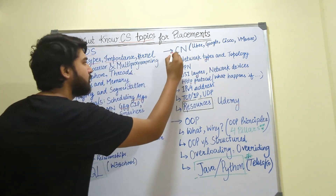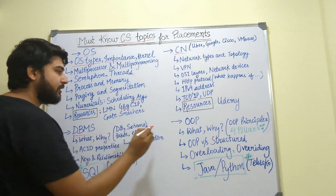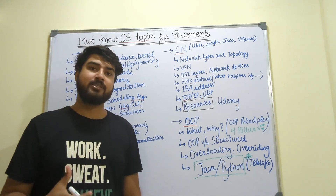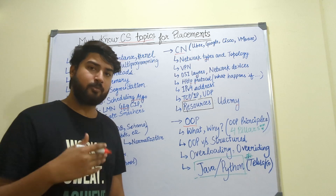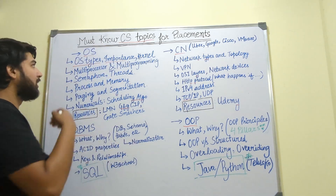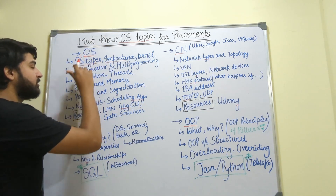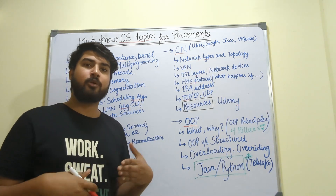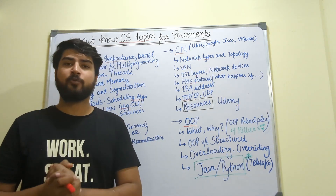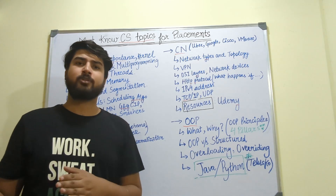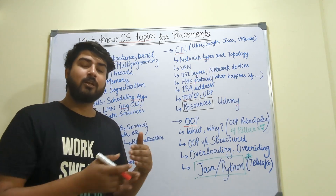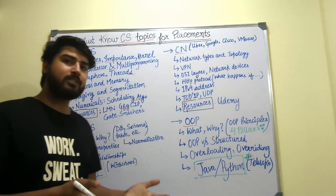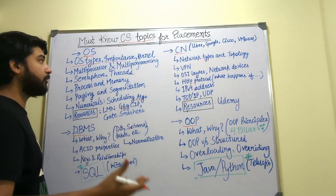We have four very important computer science fundamental topics: operating system, computer networks, DBMS, and object-oriented programming. First, operating system, which is very important. A lot of good companies will test you on your knowledge of operating system. If you go for companies like Google or Amazon, there will be rounds where they might ask about and test your knowledge on operating system.